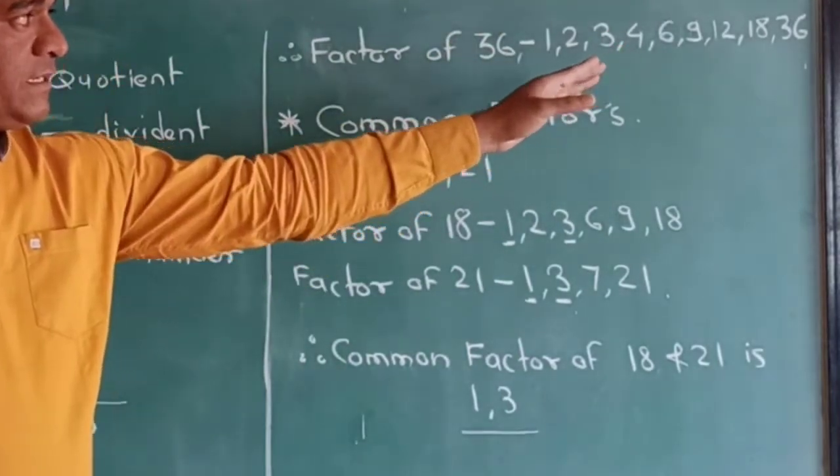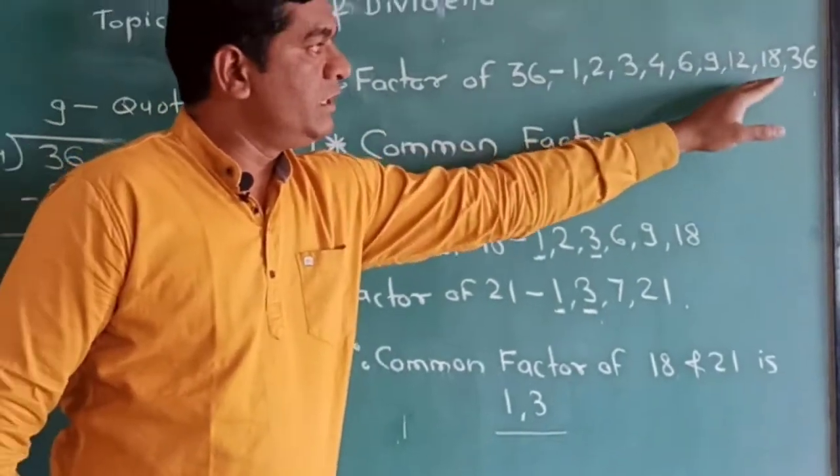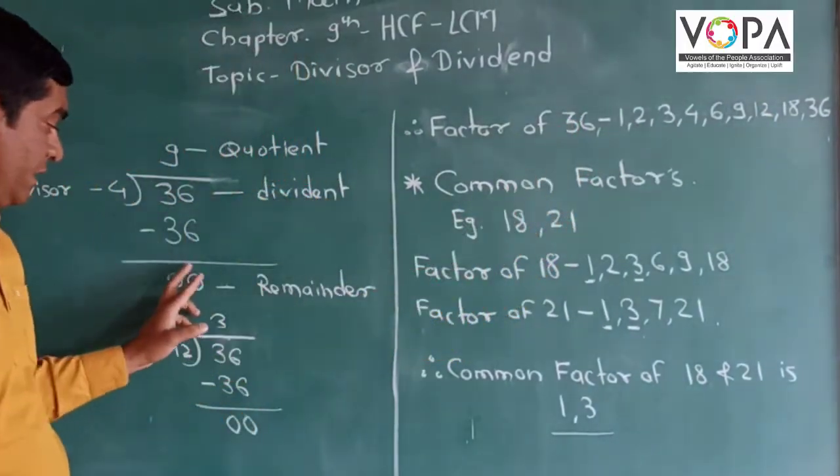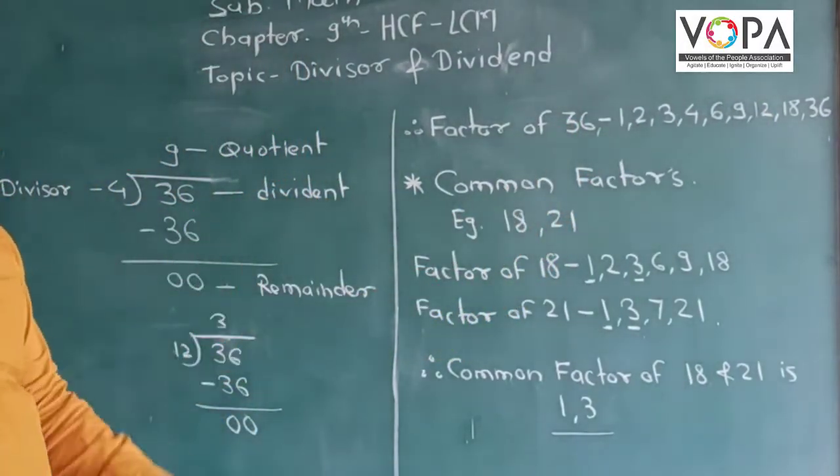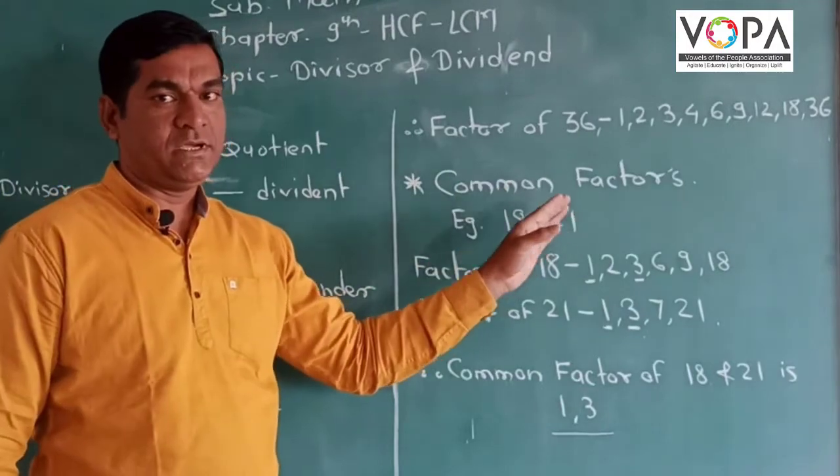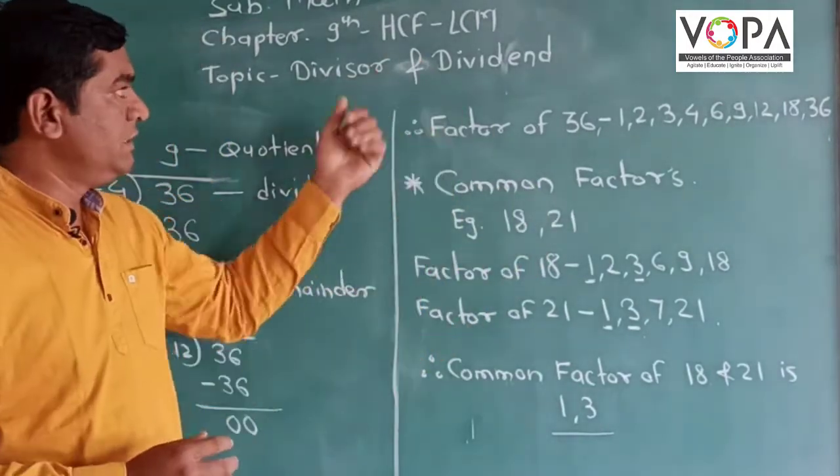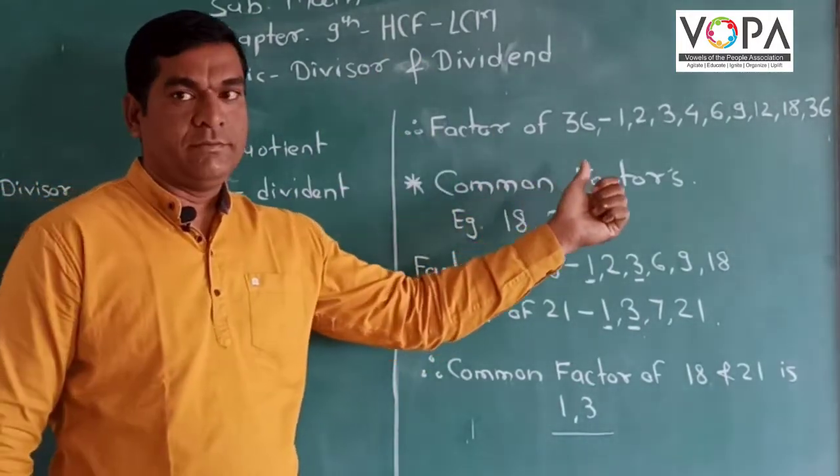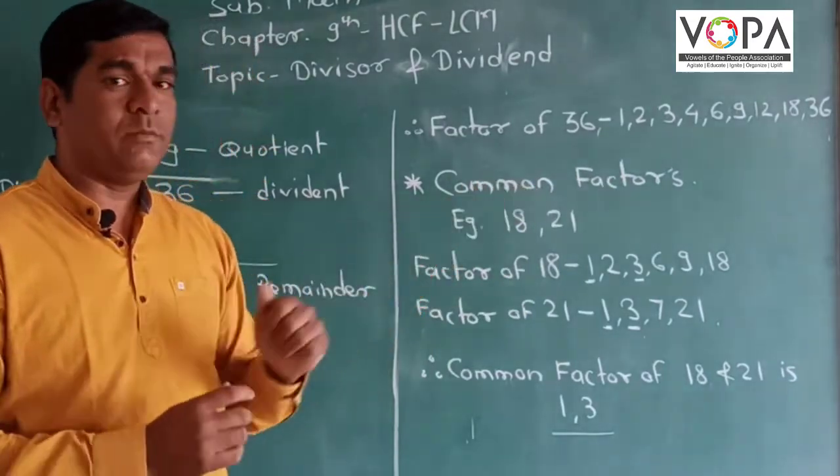Why are these factors? Because whenever we divide 36 by these numbers, we get a remainder of 0. The next topic of the chapter is common factors.